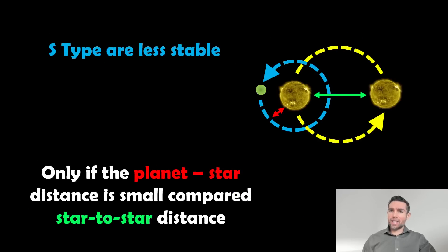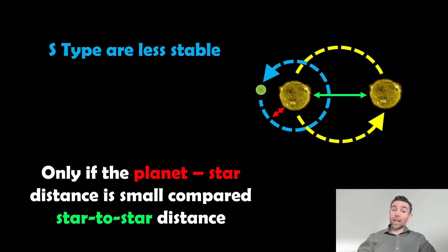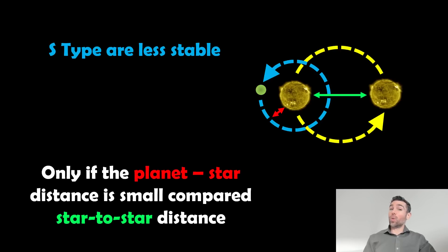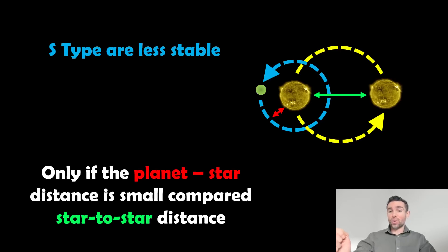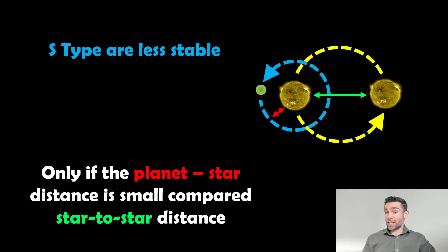With S-type orbits, they are less stable, because the planet going around one of the stars receives more significant perturbations as that star and the other star orbit each other. This only really works stability-wise if the two stars are on a fairly wide orbit, or if the planet is very close to the star it's orbiting, with a large distance between the two stars. If the planet is on a wide orbit and the stars are close to each other, it won't be very stable. So P-type are better than S-type for stability, but both can be stable in certain situations.